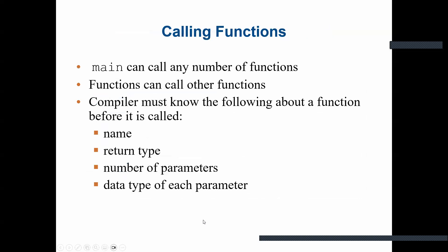Main can call any number of functions, and functions can call other functions. Before calling a function, the compiler must know the following about it: the name of the function, the return type, the number of parameters, and the data type of each parameter. This information together makes up the function heading.